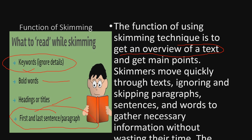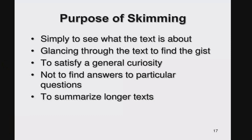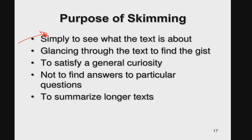You use skimming to get acquainted with the main points of the text but not everything from A to Z. Skimmers move quickly through the text, ignoring and skipping paragraphs, sentences, and words to gather the necessary information without wasting time. The purpose of skimming is simply to see what the text is all about. Sometimes while doing a comprehension, we skim just to have an idea of what the entire text is about, going through keywords or subheadings from the first paragraph to the end.